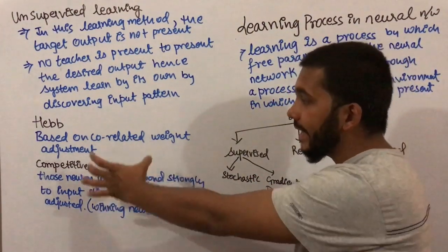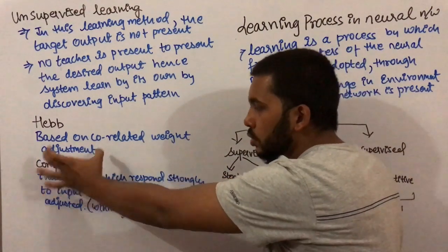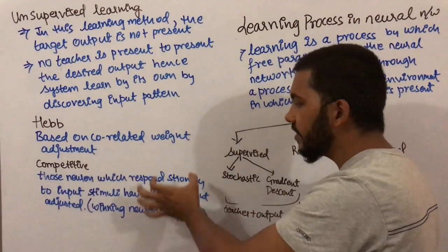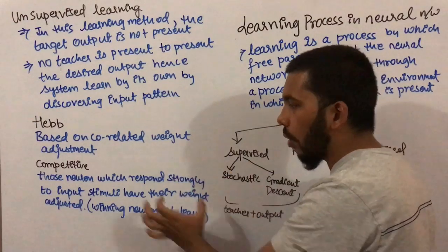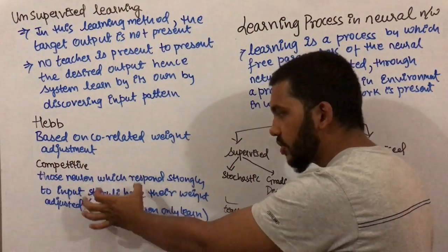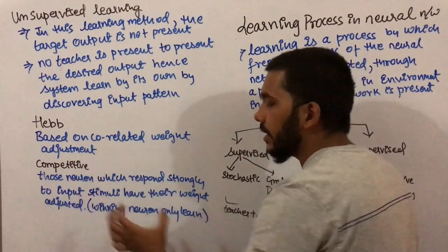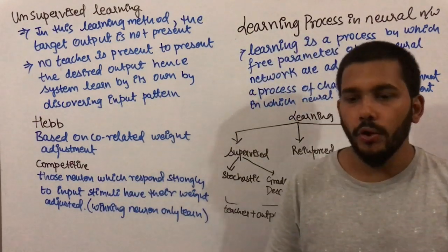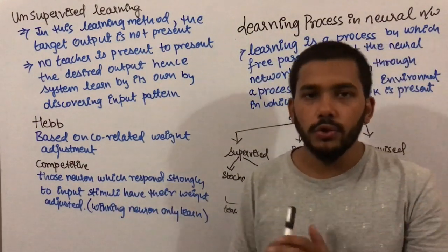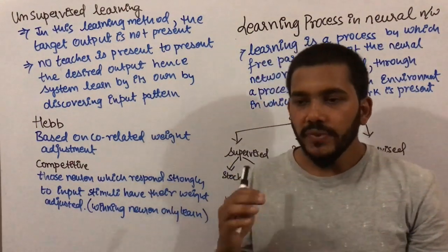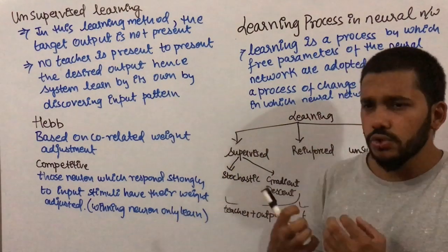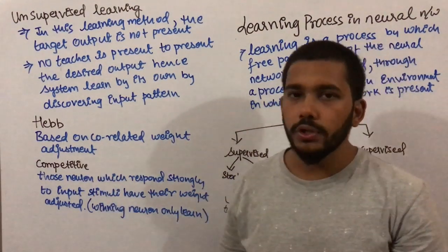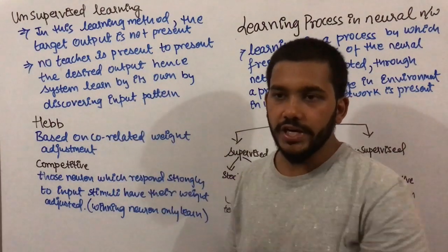In competitive learning, those neurons which respond strongly to the input stimuli have their weights adjusted. Suppose we have a set of neurons — say 1 to 10 neurons are present — and the neuron which responds most strongly to the input will be the only one to have its weight adjusted.